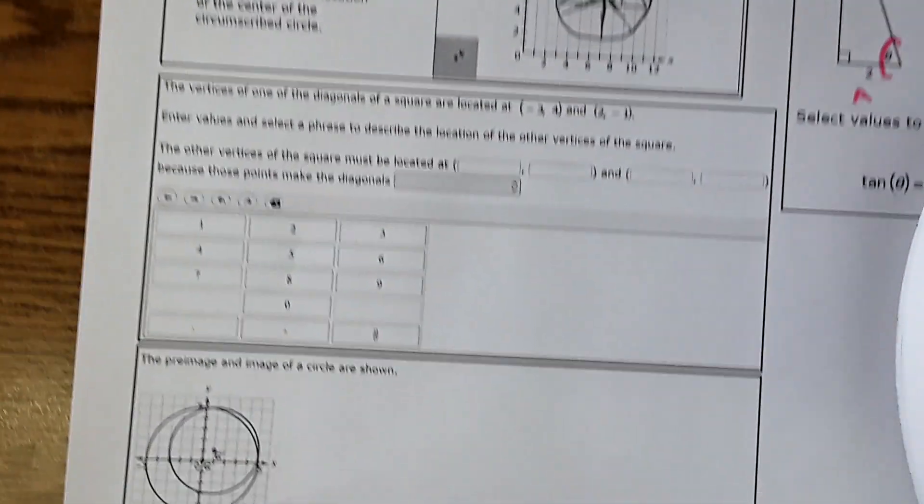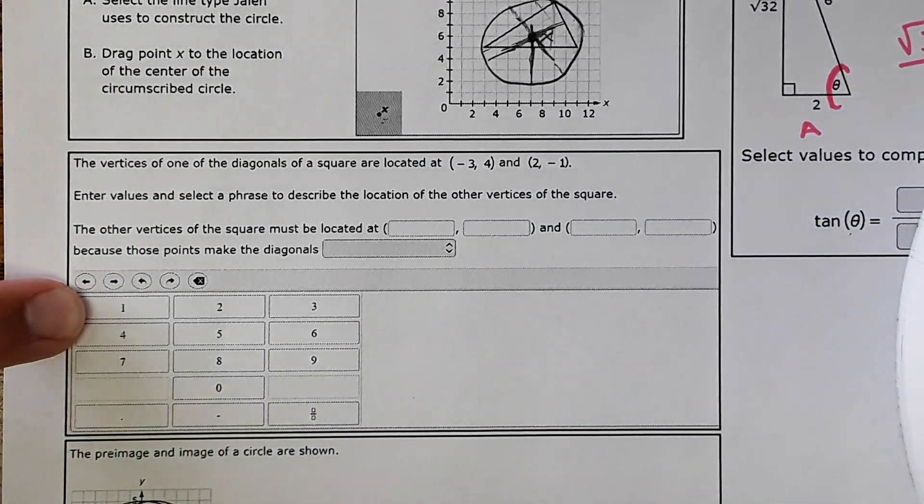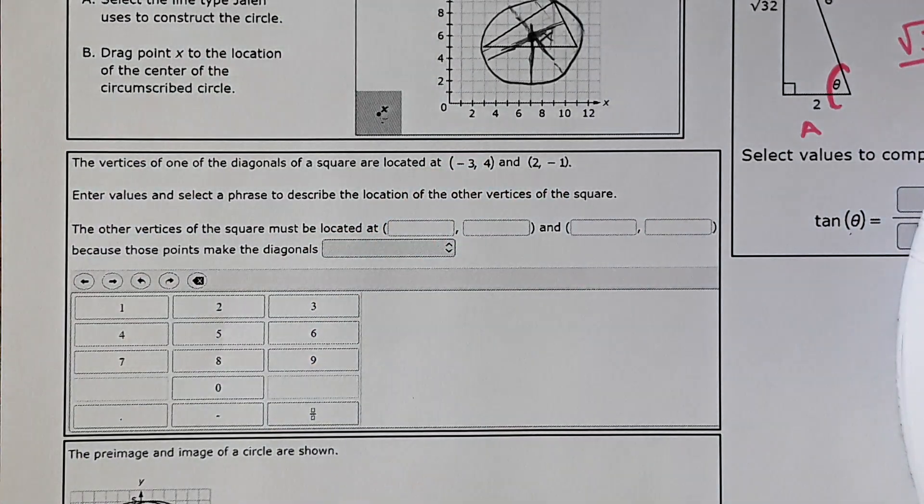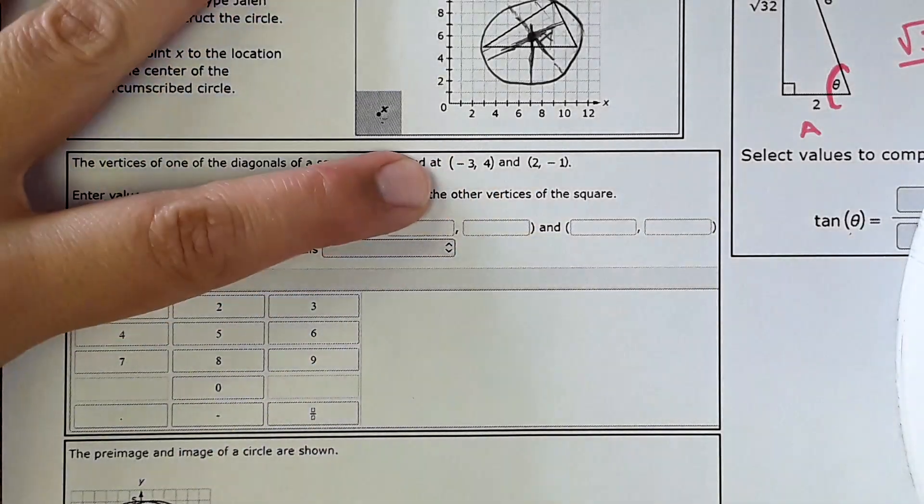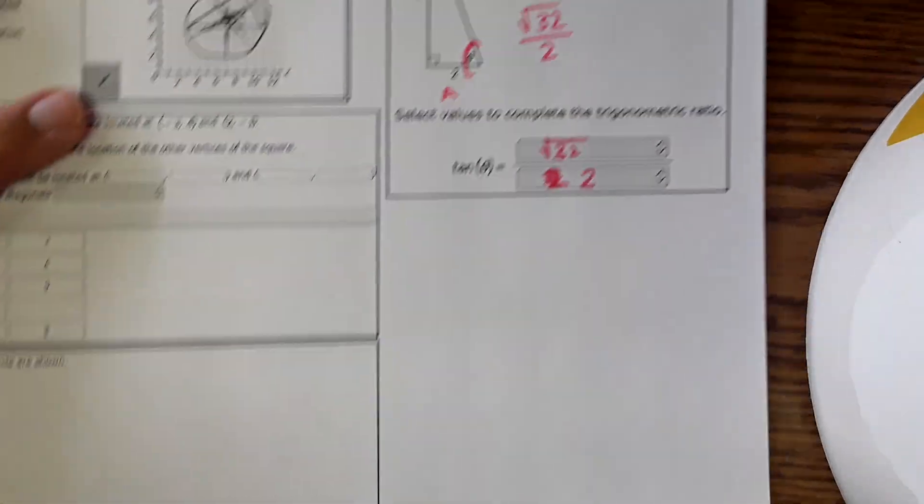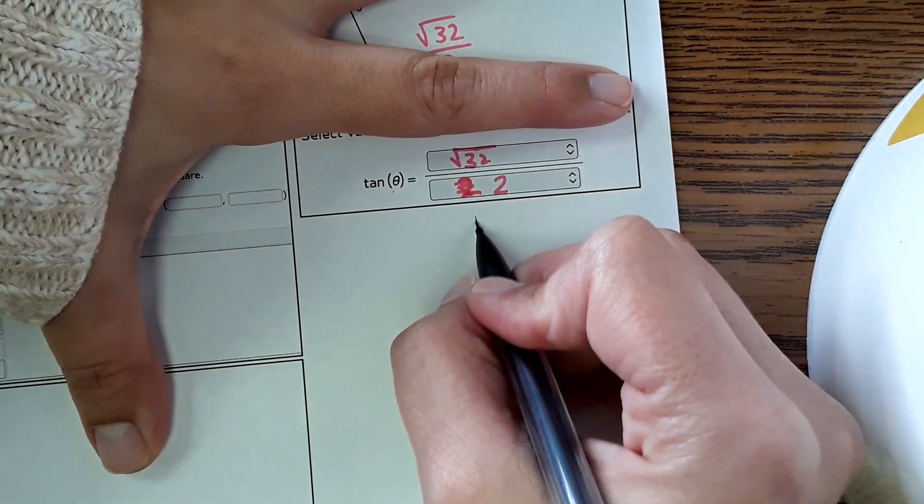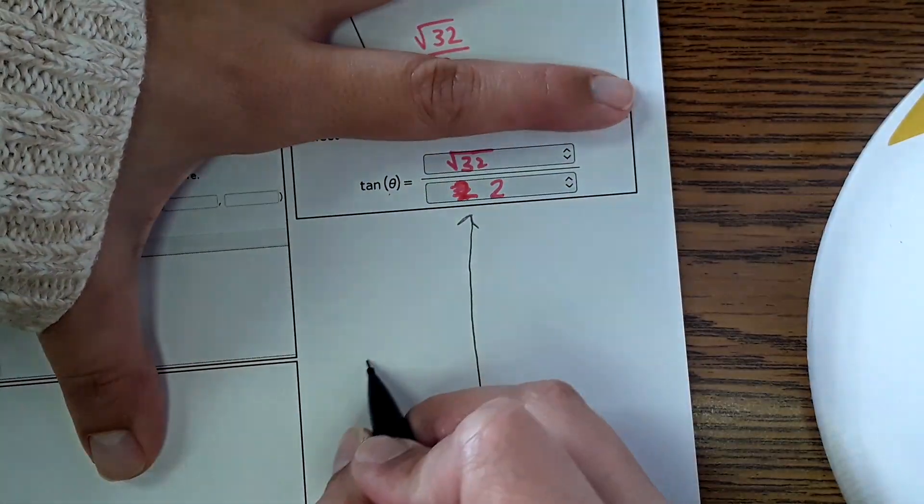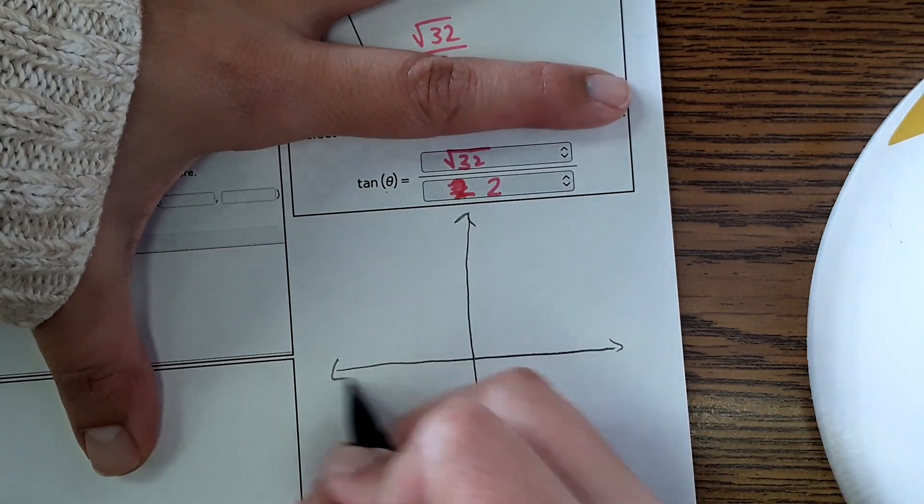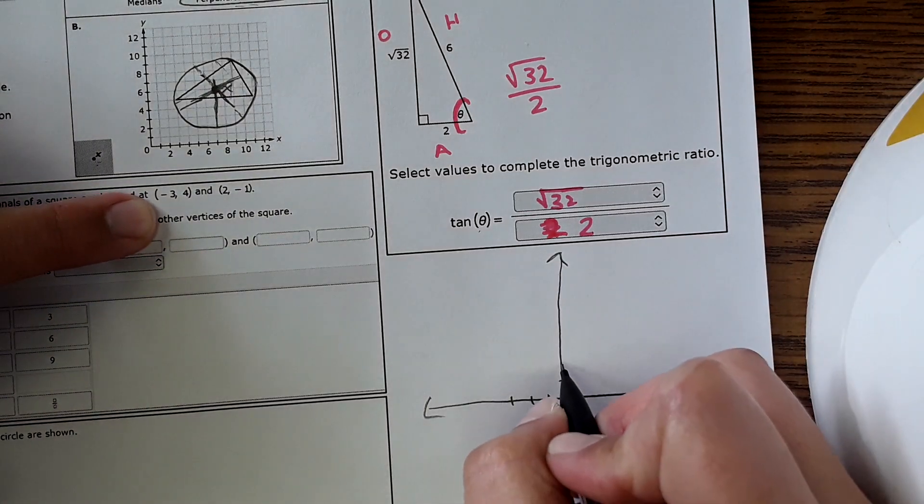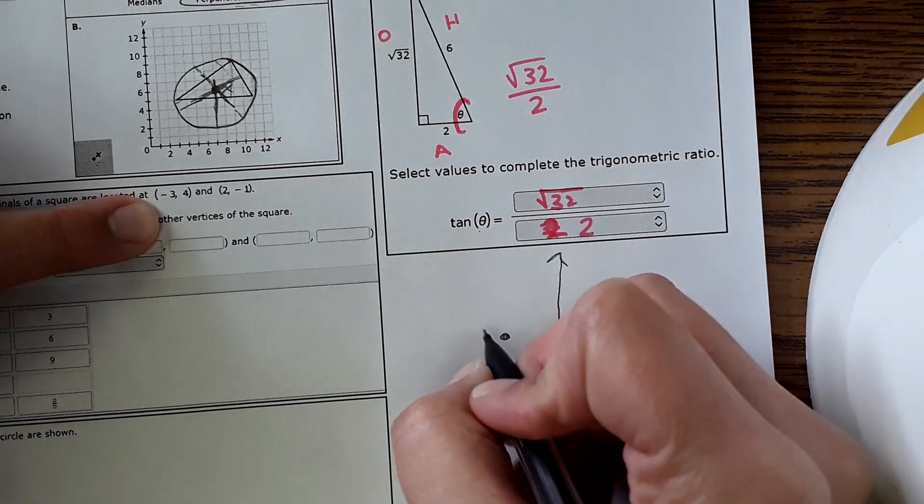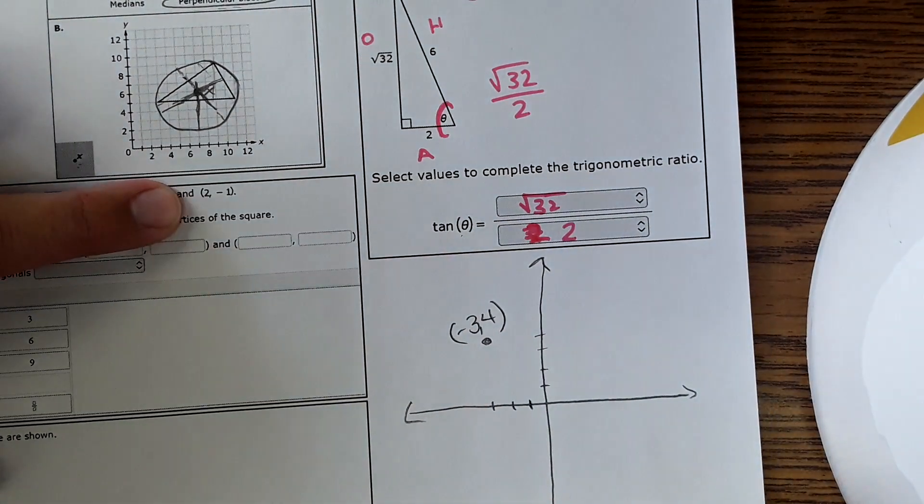Next one. It says the vertices of one of the diagonals of a square is located at these two points. Enter values and select a phrase to describe the location of the other vertices of the square. So I'm trying to find the other two points of the square. What I'm going to do is actually sketch it out. Over in this blank space I'm going to draw myself a little coordinate plane. You will have graph paper available to draw on for the ESC as well. I'm going to plot these points. It's like negative 3, 4. And then 2, negative 1.